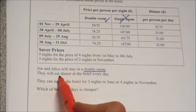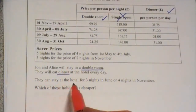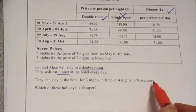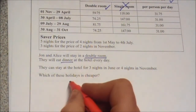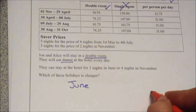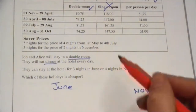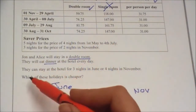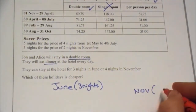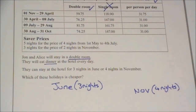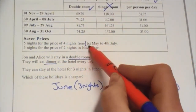They will eat dinner at the hotel every day, so I'm going to be interested in the dinner prices too. They can stay for three nights in June or four nights in November — which is cheaper? I'm going to split my page to compare June and November. Now I know the dates, I can check for deals. The first offer is five nights for the price of four, from 1st May to 4th July — that does include June.